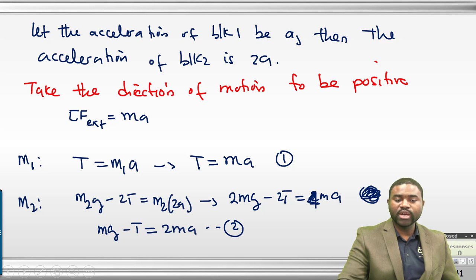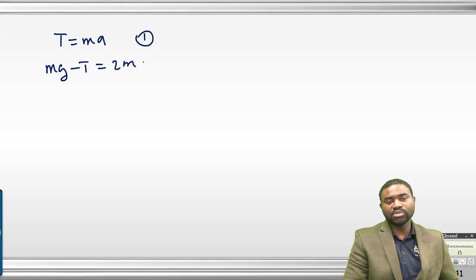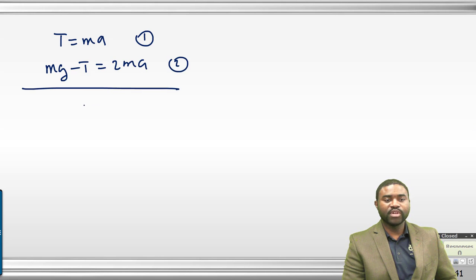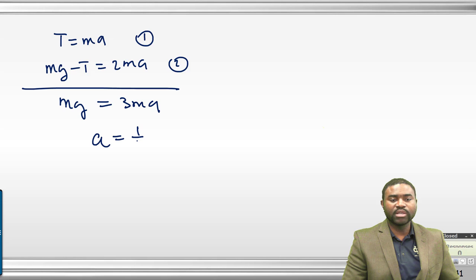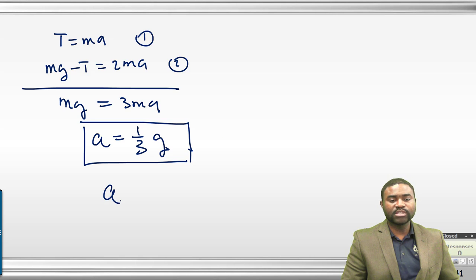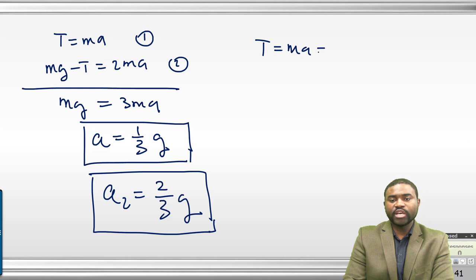Equation 1 says T equals M·A. Equation 2 says MG minus T equals 2M·A. Adding the two equations, the T cancels out. We get MG equals 3M·A, so the acceleration A equals G/3. Therefore the acceleration of block 2 is 2G/3. The tension T equals M·A equals (1/3)MG, so T equals (2/3)MG.